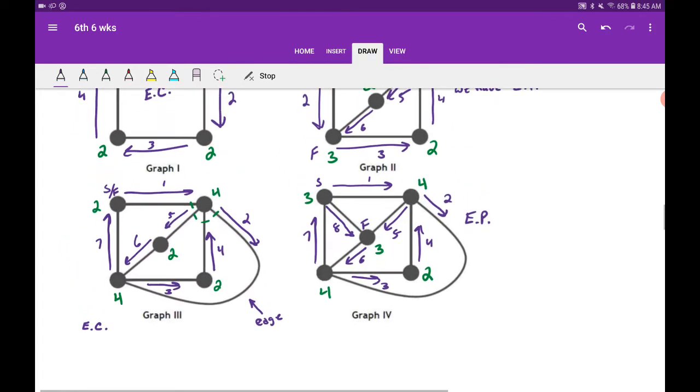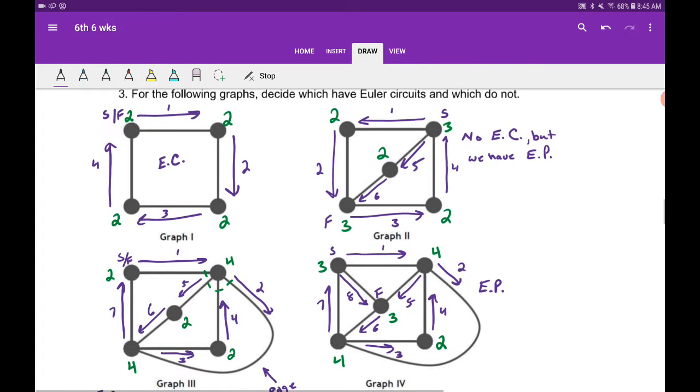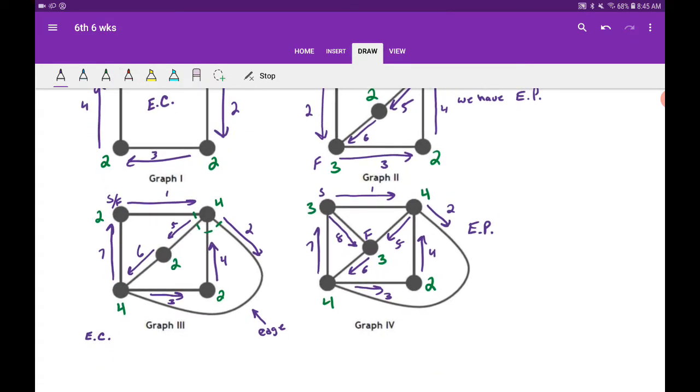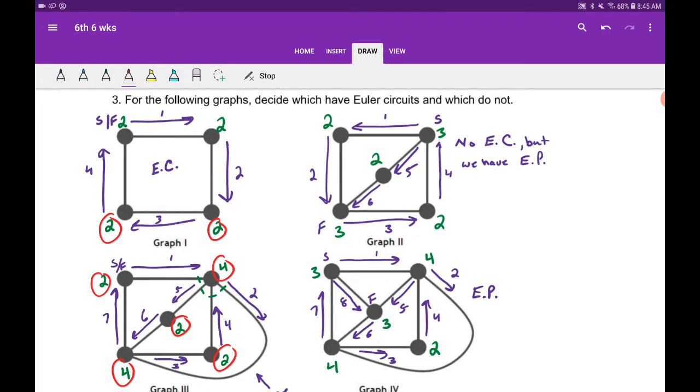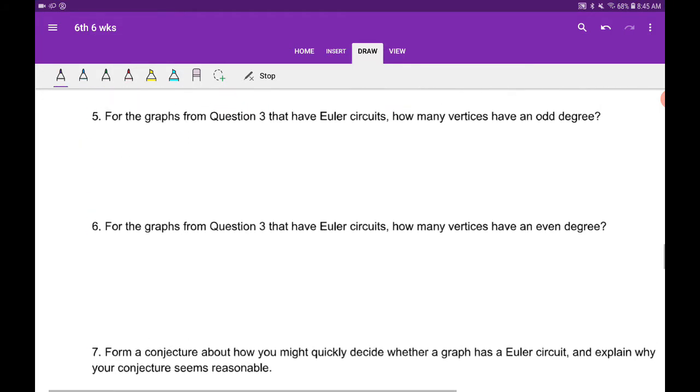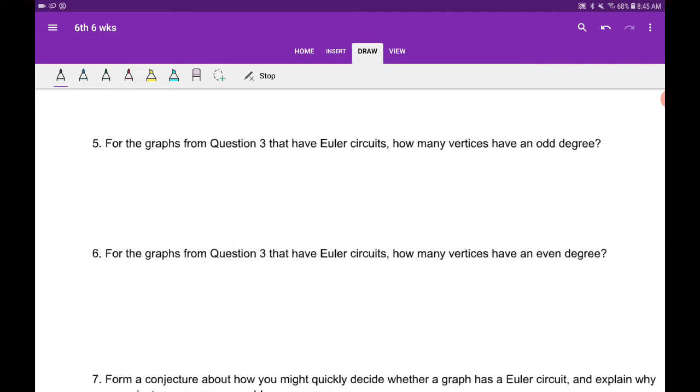So if you look over here, if you look at all these degrees, we have degree two, four, basically just circled on here. They are not odd at all. All of them are even, right? So none of the vertices have an odd degree.